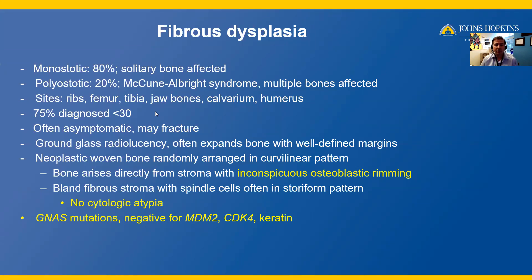Histologically, it's a neoplastic proliferation of woven bone randomly arranged in a curvilinear pattern. The bone arises directly from the stroma with inconspicuous osteoblastic rimming. The stroma is very bland and looks fibrous; these spindle cells often have a storiform pattern. There may be osteoclast-like giant cells, maybe hemorrhage, maybe a prominent vascular pattern, and they may also have foaming macrophages. Importantly, however, you will not see cytologic atypia.